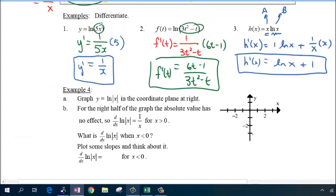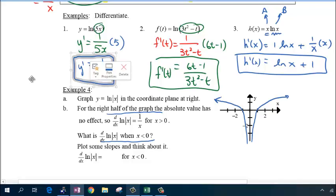Here we have the natural log of x function. The absolute value just means you take everything that's to the right of the y-axis and it's a reflection in the y-axis. For the right half of the graph, the absolute value has no effect because it's the same function. But what about the left half of the graph? Notice in this case you have some slopes.